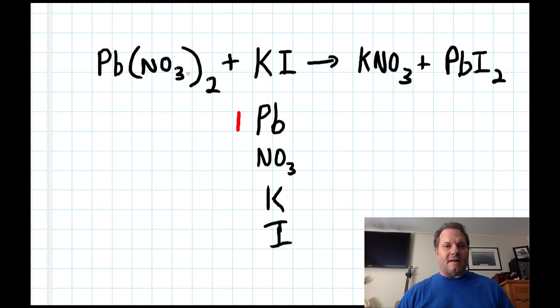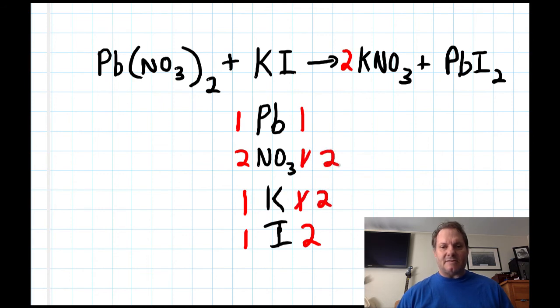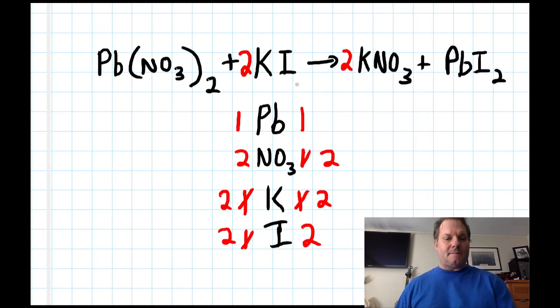So I make my list and then I just start counting. How many leads do I have? One. How many NO3s am I showing? Two. How many Ks? One. How many I's? One. How many Ks on the right side? I have one. How many NO3s? One. How many PBs? One. How many I's? Two. So I have to fix the NO3s by putting a two here. That's going to change my potassiums to two, but it will fix my NO3s. So they're two as well. Now it looks like I need to fix my iodides. I can come up here, put a two there. That gives me two potassiums and two iodides. Wow, that worked well. One lead, two nitrates, two potassiums, two iodides on each side. Count, change, count, change.